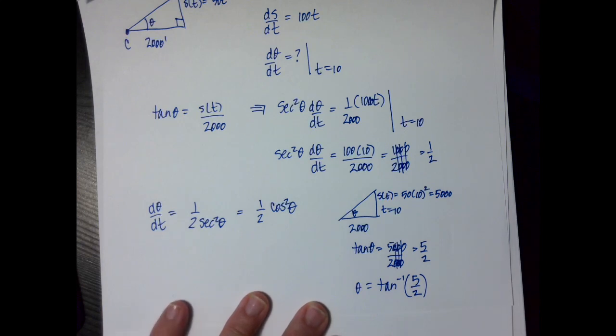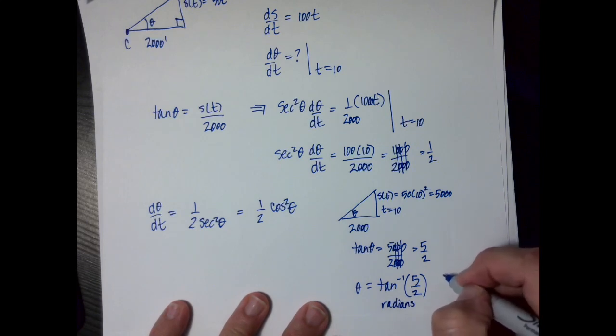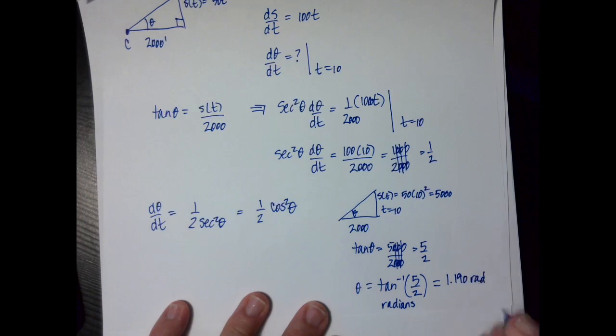If you push buttons on your grapher, radians always in calculus, you're going to get that that is 1.190 radians.